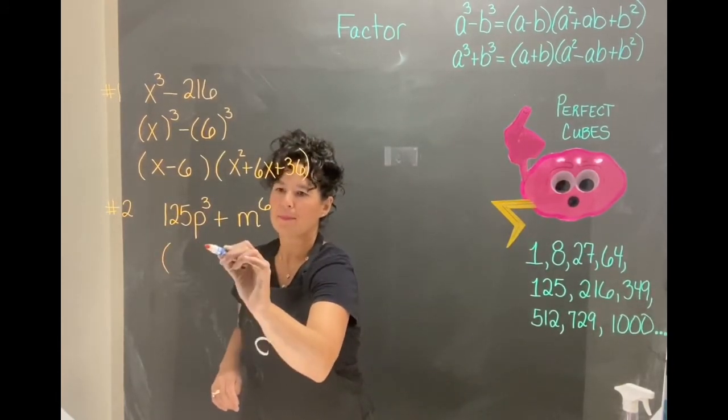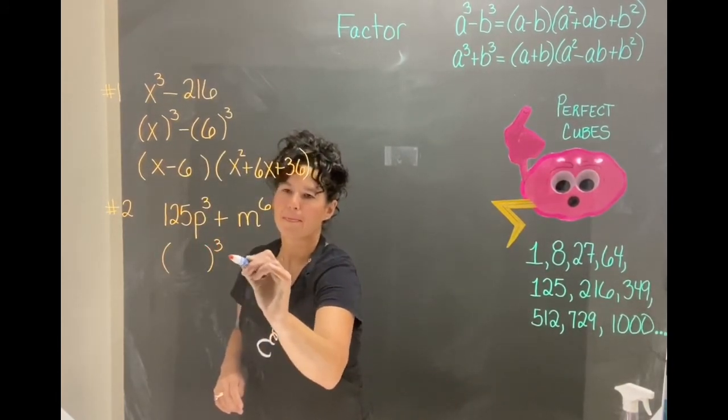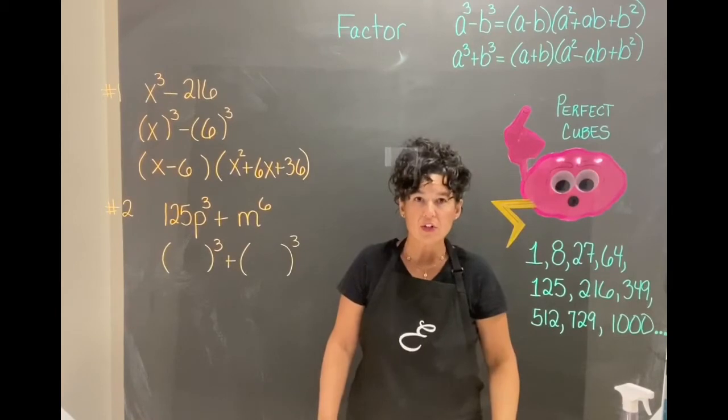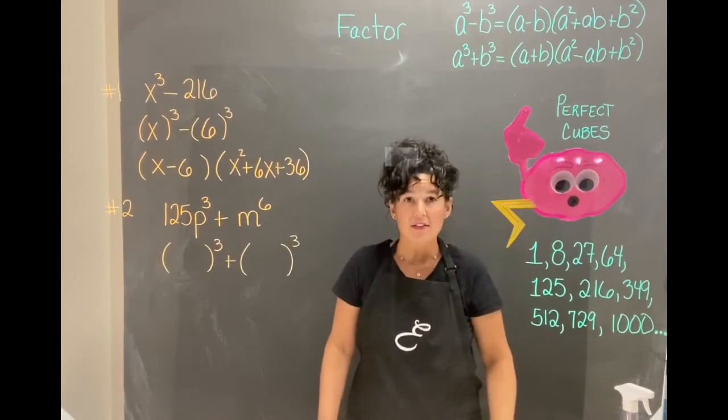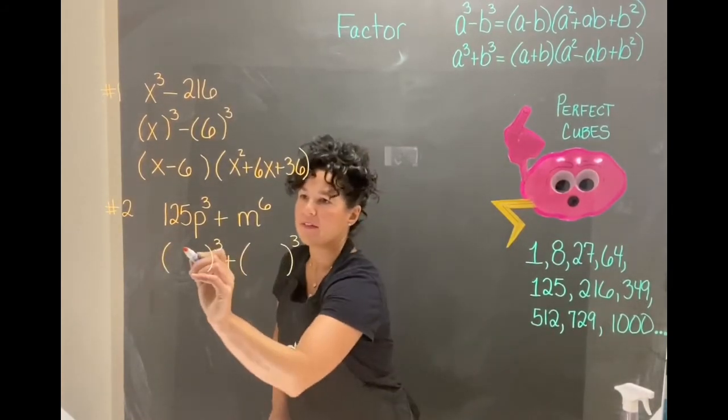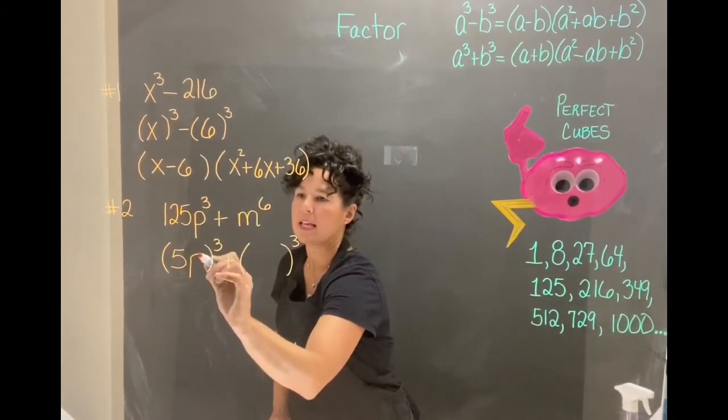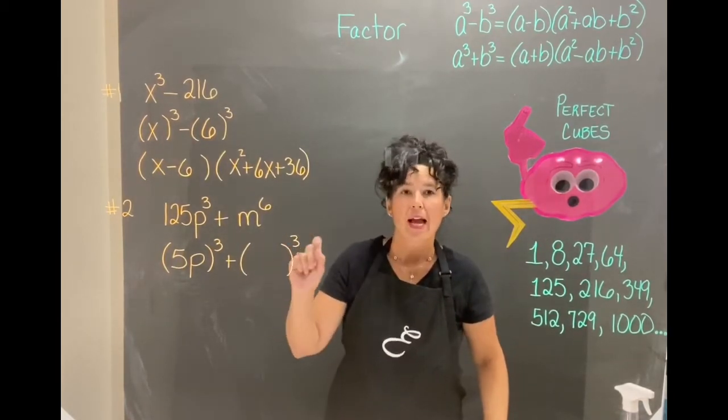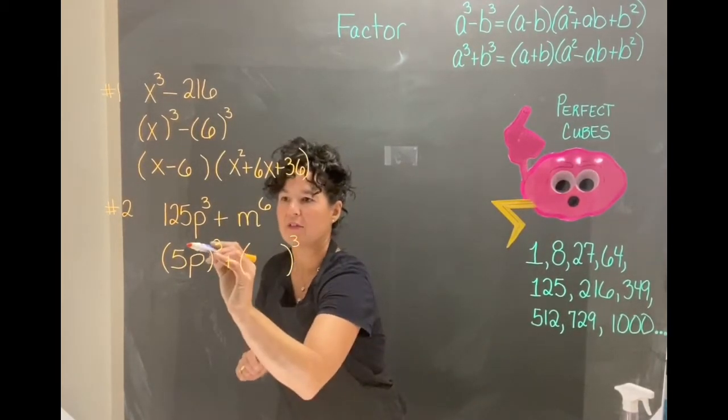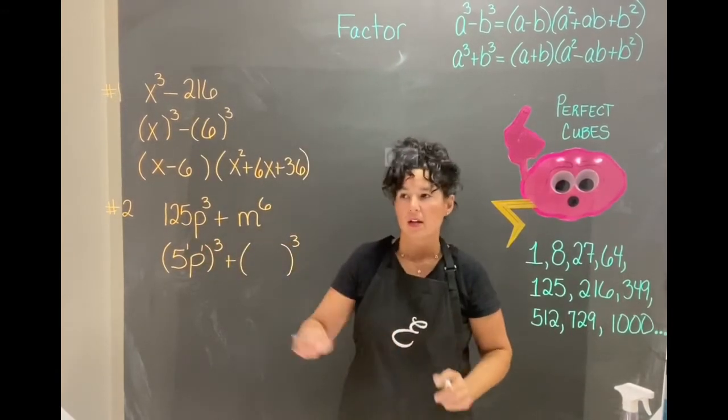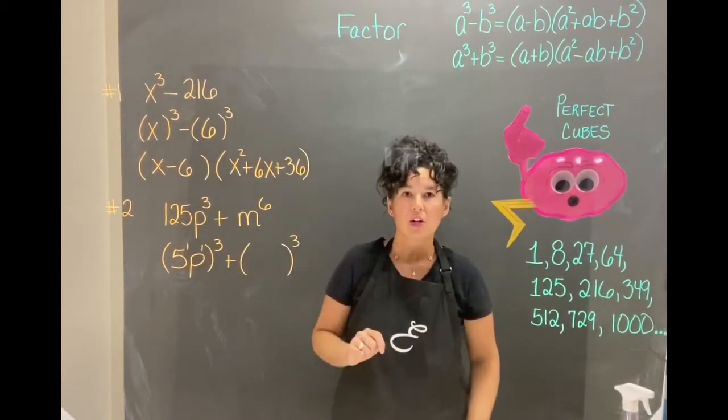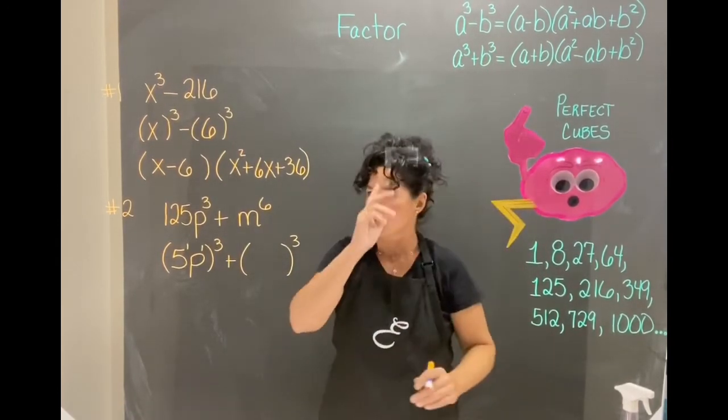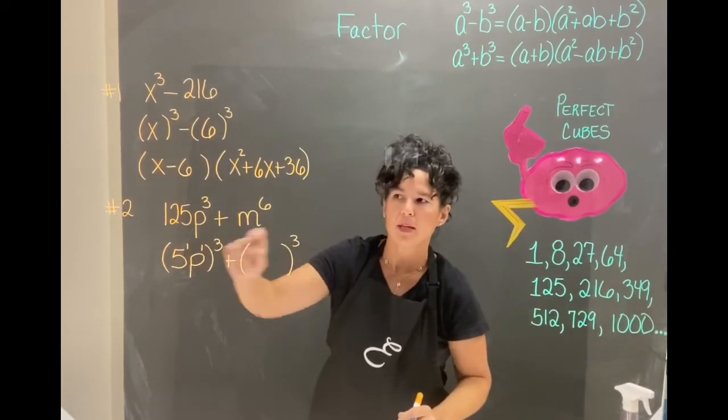Let's go ahead and rewrite it to emphasize what is being cubed. 125 is 5 times 5 times 5. So the 5 is being cubed and the p is being cubed. Remember my silly saying, your exponents technically here for the 5 is 1 and for the p is 1. When you have a power raised to a power you multiply. Power to a power multiply. So we have 5 cubed p cubed.